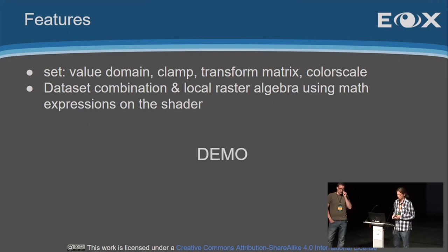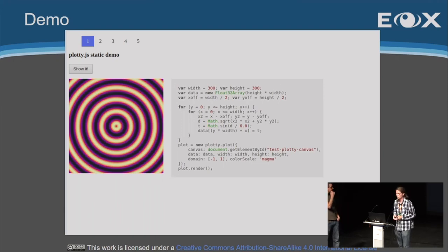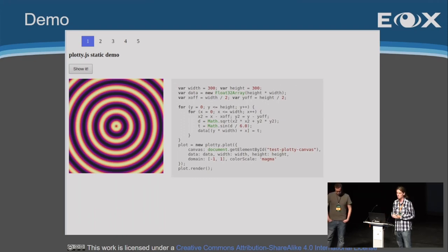I prepared a demo which I figured out is not working, so sticking back to the screenshots. First is a static demo which on click shows some arbitrary data — this is a sine function. The first part produces the values, and then the Plotty plot chart is created. It targets the canvas element, sets the data, and sets the width and height. That's all the input it needs. You can set the color scale or use the default one, and then render to the canvas.